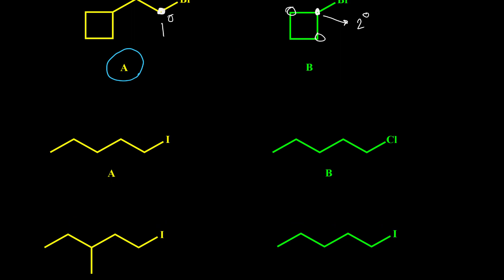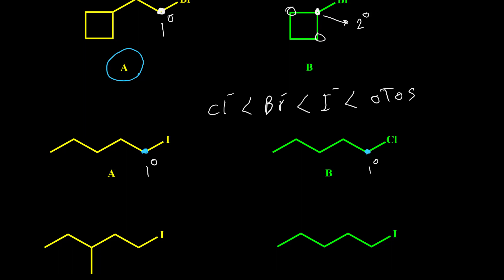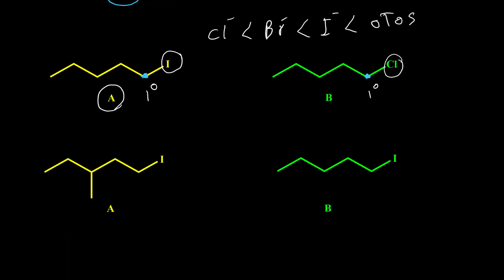For the next example, both compounds A and B are primary — the carbons directly attached to iodine and chlorine are primary — so the alkyl group structures are the same, but the leaving groups are different. The trend for leaving groups is: iodide is better than bromide, bromide better than chloride, and tosylate is better than iodide. Here we have iodide and chloride, so the rate of reaction for A is better because it has a better leaving group.